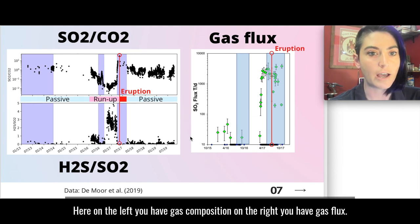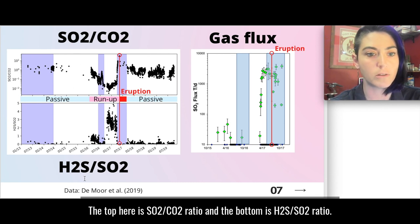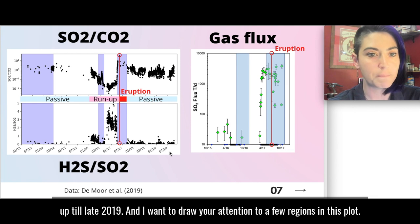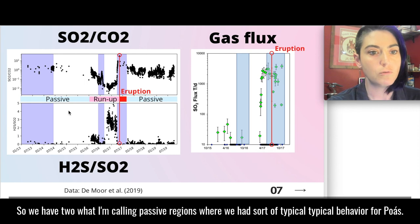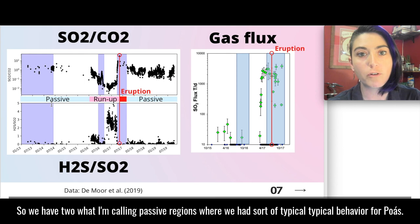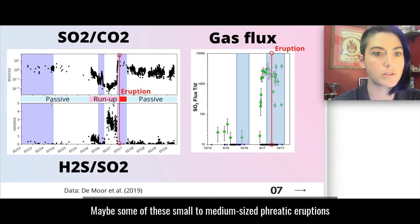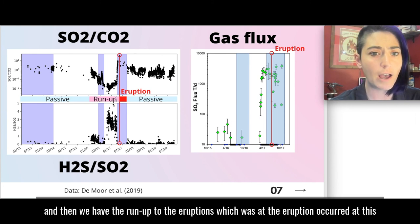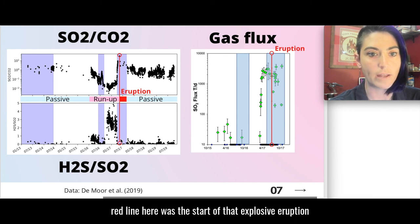So even just from looking at these pictures you can already tell that this was a very unique eruption and that it was very large and explosive and it was extremely sulfur rich. And that's reflected in the data as well. Here on the left you have gas composition, on the right you have gas flux. At the top here is SO2/CO2 ratio and the bottom is H2S/SO2 ratio. You'll see this is from a very long period of time back from 2013 all the way up to late 2019. And I want to draw your attention to a few regions in this plot.